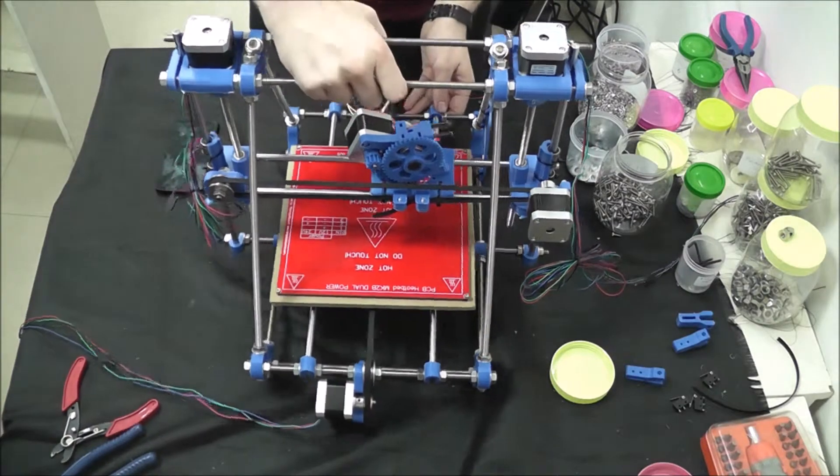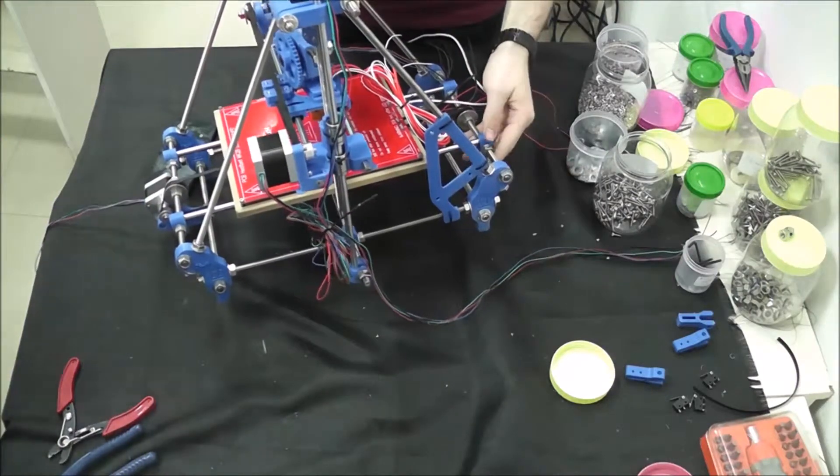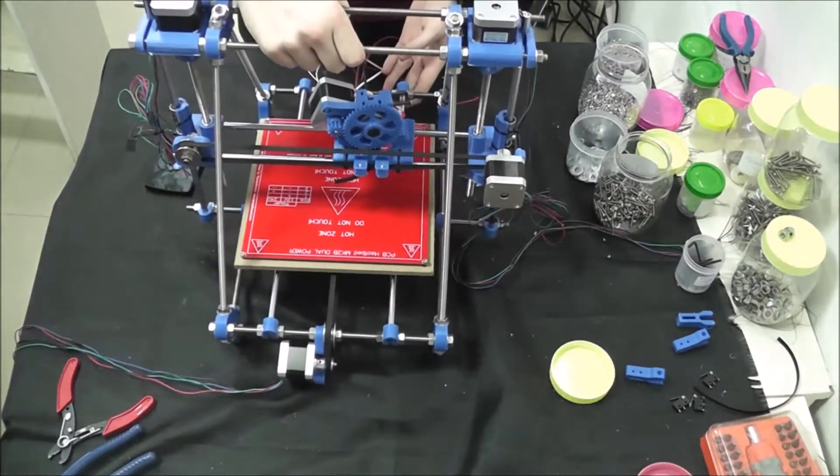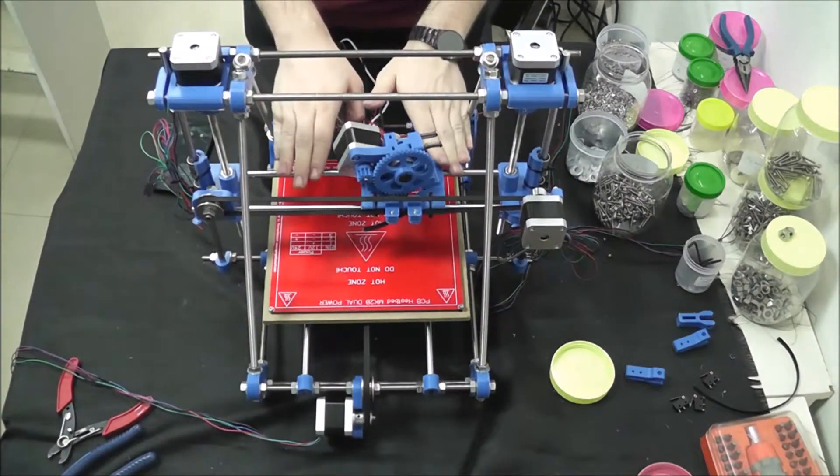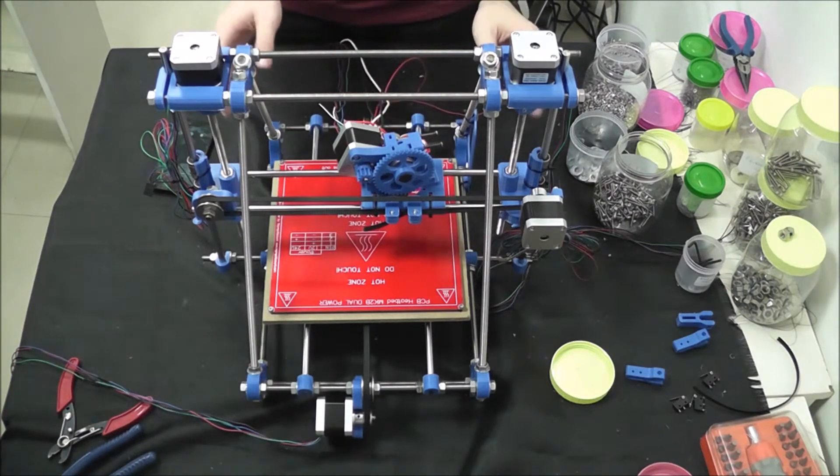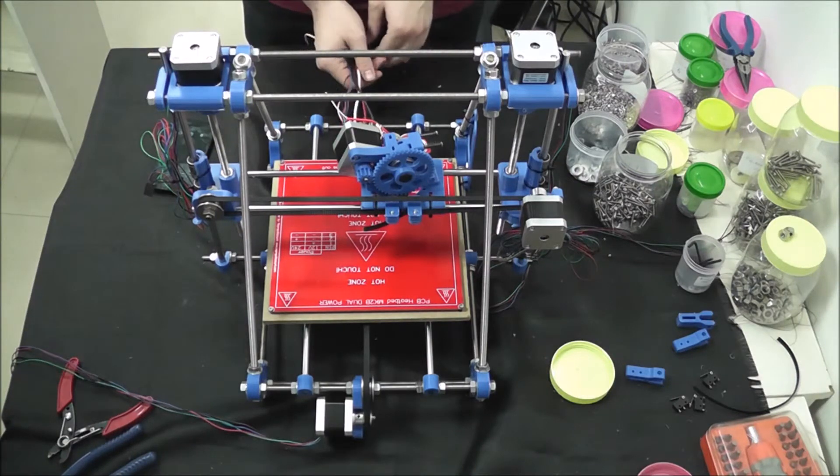We also went ahead now and mounted the electronics mounting plate here on the side in this matte fashion using zip ties. We are going to go ahead and make sure the X axis is level on the Z, make sure there's nothing loose that needs tightened, and get into the end stops and electronics wiring.